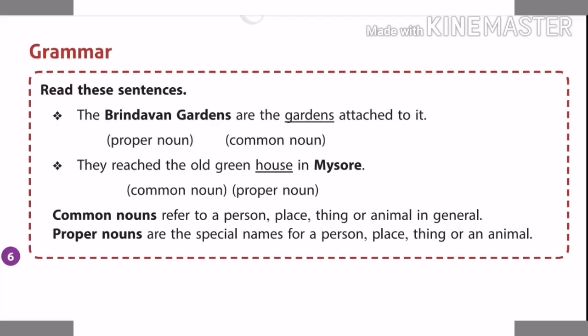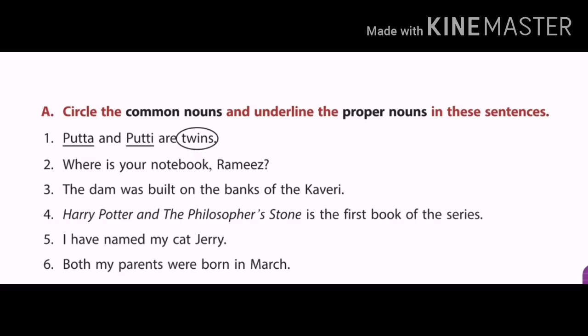In your textbook, page number 6, we can see the grammar portion. First sentence: The Brindavan Gardens are the gardens attached to it. Here the garden is named Brindavan and it begins with a capital letter B, so that is the proper noun. Garden is a common noun. Next: There is the old green house in Mysore. House is the common noun, but Mysore is a particular name for a particular place, so that is the proper noun. An activity on page number 7 asks you to circle the common noun and underline the proper noun in the sentences — do it by yourself.